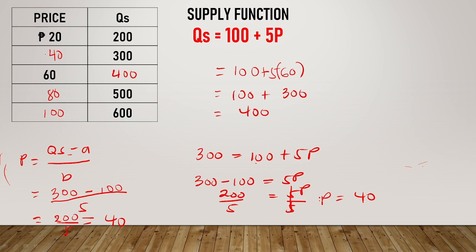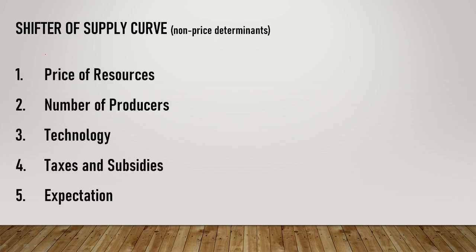Now let's proceed to the shifters of supply. These are the shifters of supply: price of resources, number of producers, technology, taxes and subsidies, and expectation. These are the non-price determinants when it comes to the supply curve. Therefore, price of resources - if the price of the product increases, say the price of pork increased, then you will supply less syumai because it's more expensive to produce.